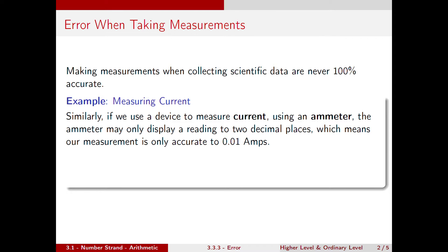Making measurements when collecting scientific data are never 100% accurate, so we need to take into account that the machines we use or even our own senses, such as our eyesight, can potentially cause error to propagate through our results.